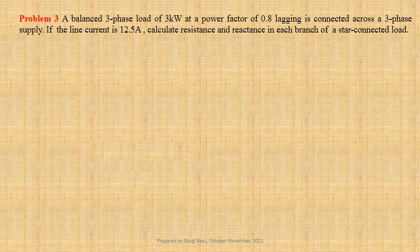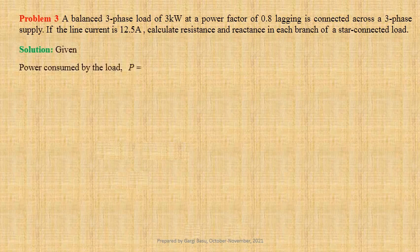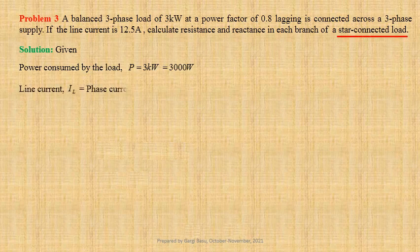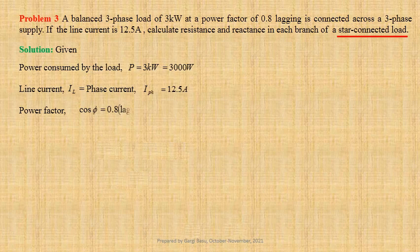A balanced three-phase load of 3 kilowatts at a power factor of 0.8 lagging is connected across a three-phase supply. If the line current is 12.5 ampere, we have to calculate resistance and reactance in each branch of a star connected load. Given data: power consumed P equals 3 kilowatts, that is 3000 watts. For star connected load, line current IL equals phase current I_phase, that is 12.5 ampere. Power factor cos phi equals 0.8 lagging.